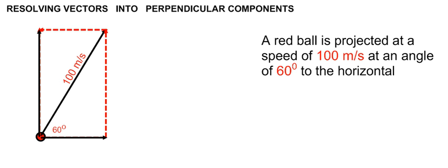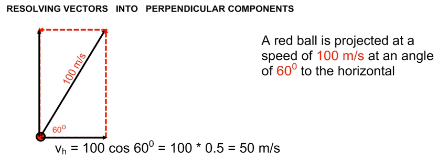The horizontal side of the parallelogram is found by 100 cos 60, meaning the horizontal velocity vector is given by the magnitude of 100 cos 60. Since cos 60 is 0.5, 100 cos 60 gives us 50. Therefore, the horizontal velocity vector is 50 meters per second.